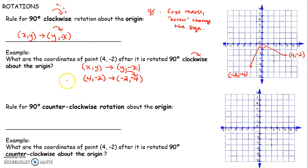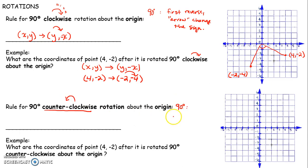Let's talk about the rule for rotating 90 degrees counterclockwise. For any 90 degree rotation, I always first reverse. Then arrow, change the sign — but now the arrow goes counterclockwise, and that's the coordinate whose sign I change.